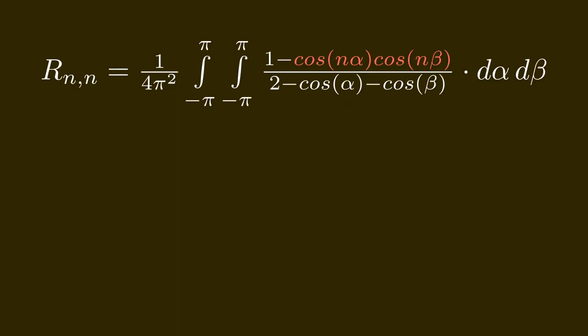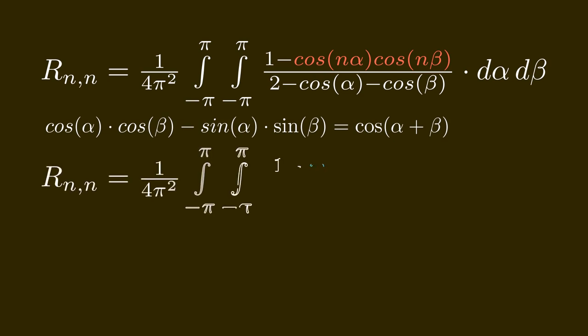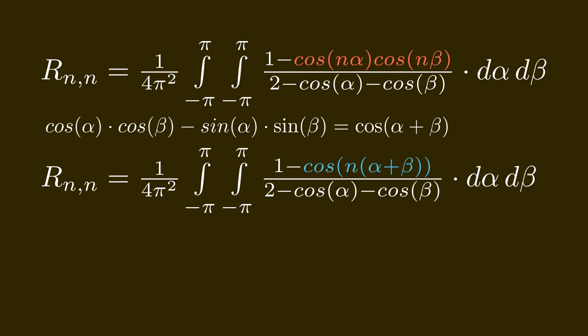To replace this product of the two cosine functions with a sum, we will use the identity from the last page. The identity allows us to replace the product by a sum, but then we have to add two sine terms. Here I replace the product by a sum, but I left out the sine terms. Why can I do that?